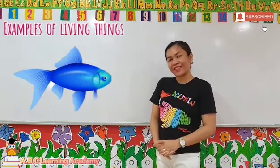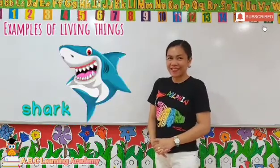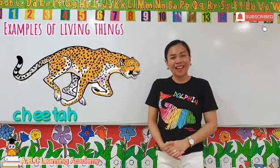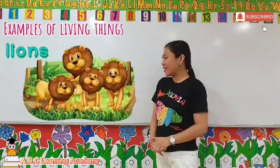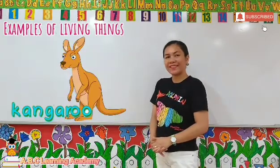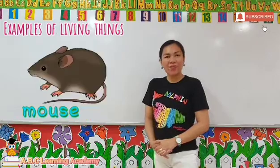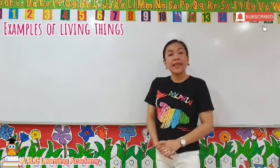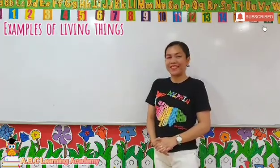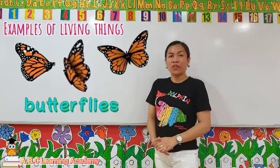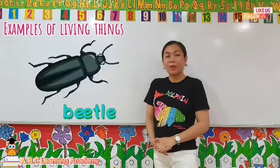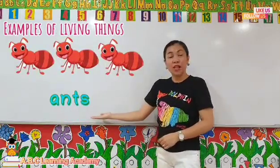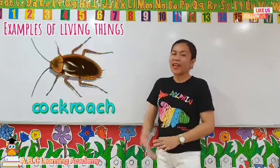Animals are living things too, like fish, shark, tiger, cheetah, lions, kangaroo, and mouse, and whales. Insects are living things too, such as butterflies, beetle, ants, grasshopper, and cockroach.